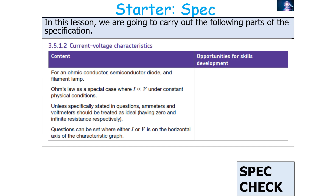In this lesson we're going to look at the following part of the AQA A-level physics specification: 3.5.1.2, current-voltage characteristics.